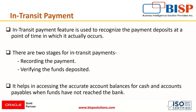In-transit refers to the payment which takes place between parties at two different banks. In NetSuite, the in-transit payment feature is used to recognize payment deposits at the point in time when they actually occur. There are two stages for in-transit payments: first, recording the payment, and second, verifying the funds deposited.